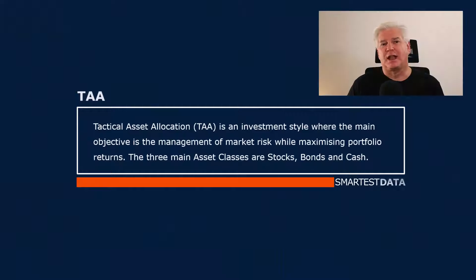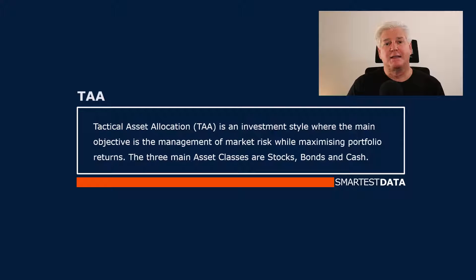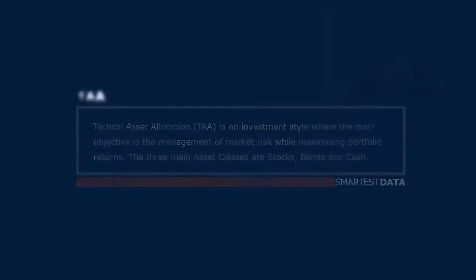Tactical Asset Allocation is an investment style where the main objective is the management of market risk while maximising portfolio returns. The three main asset classes invested are stocks, bonds and cash.